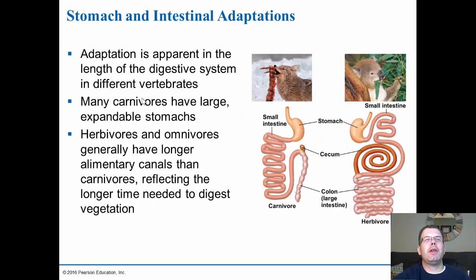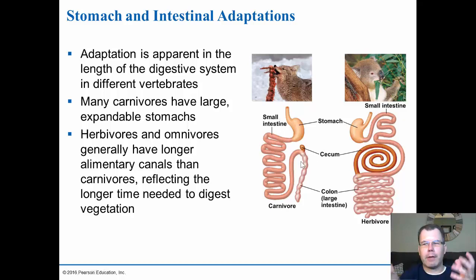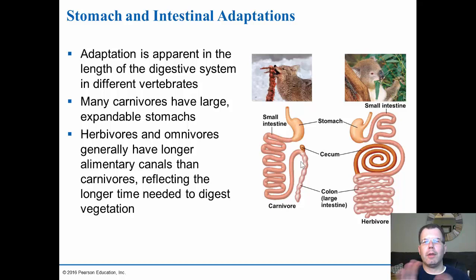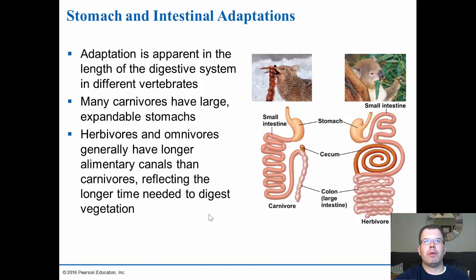Other digestive adaptations relate to the length of the digestive system and type of food eaten. Many carnivores have large, expandable stomachs for the amount of meat they consume. Herbivores and omnivores generally have longer alimentary canals than carnivores because they need more time to digest vegetation. Carnivores have less developed cecums because they don't need bacteria or enzymes to break down plant material. Humans, while omnivores, actually eat more meat than plants and so have a relatively small cecum — more similar to carnivores than complete herbivores.